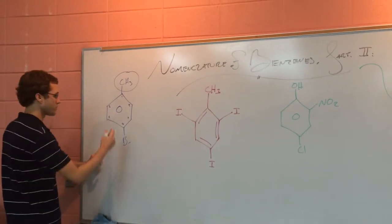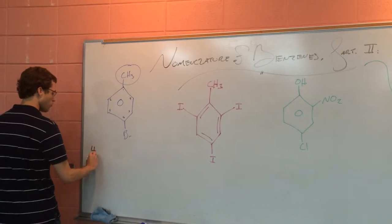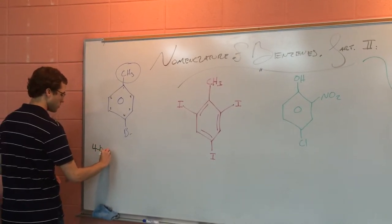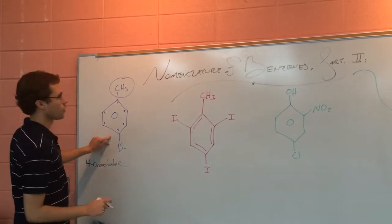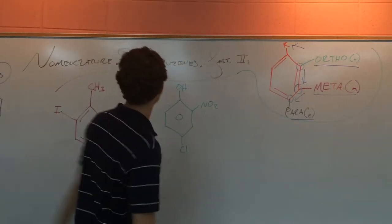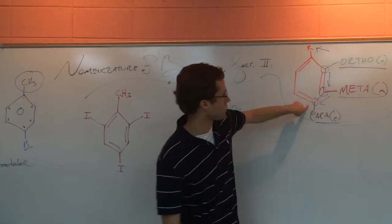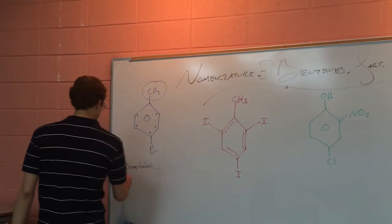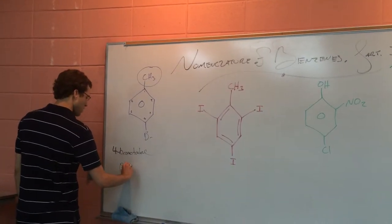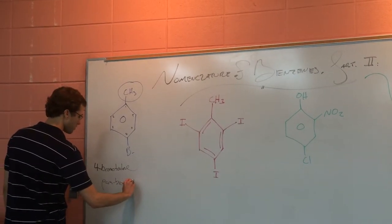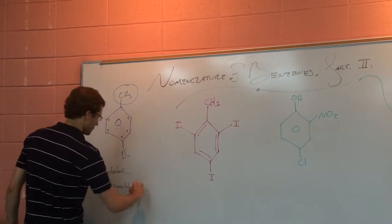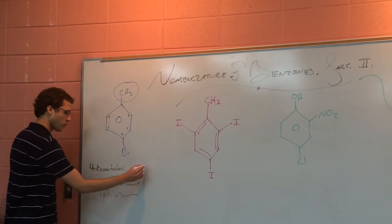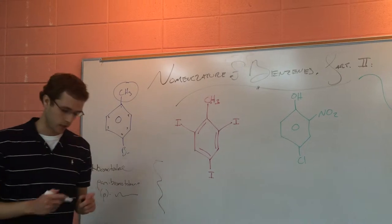So this can have two names. The first one, if we go by numbering, is going to be 4-bromotoluene. Or if we want to go by the ortho/meta/para system, since it's on the other side it's going to be para, so this could just be para-bromotoluene, or of course just P-bromotoluene. All three of these are acceptable names.